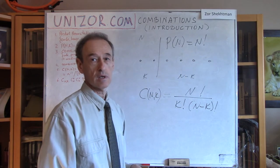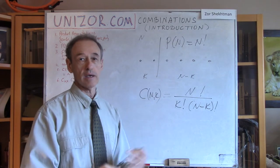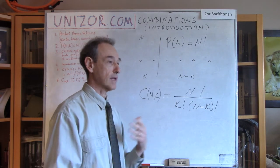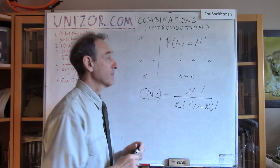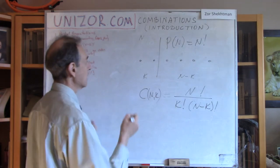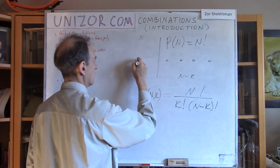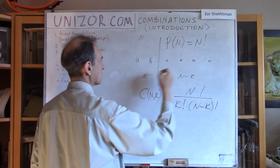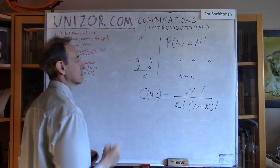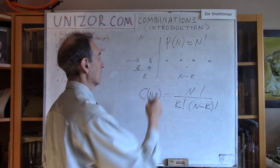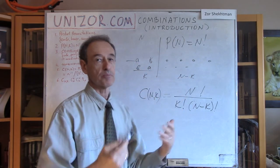Then I can change the order of these objects and again cut after the number K — whatever is on the left is my subset. What's right about this approach is that every time we get some subset. What's wrong is that sometimes we can get exactly the same subset: if I call this object A and this object B, then A-B leading the row and B-A leading the row represent exactly the same combination of A and B.